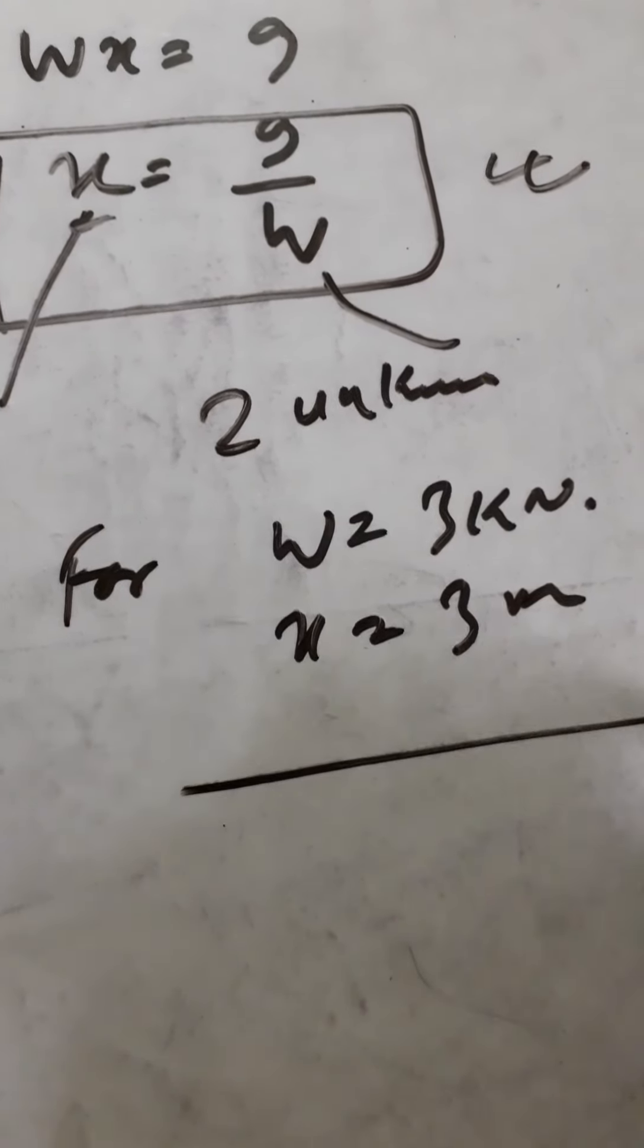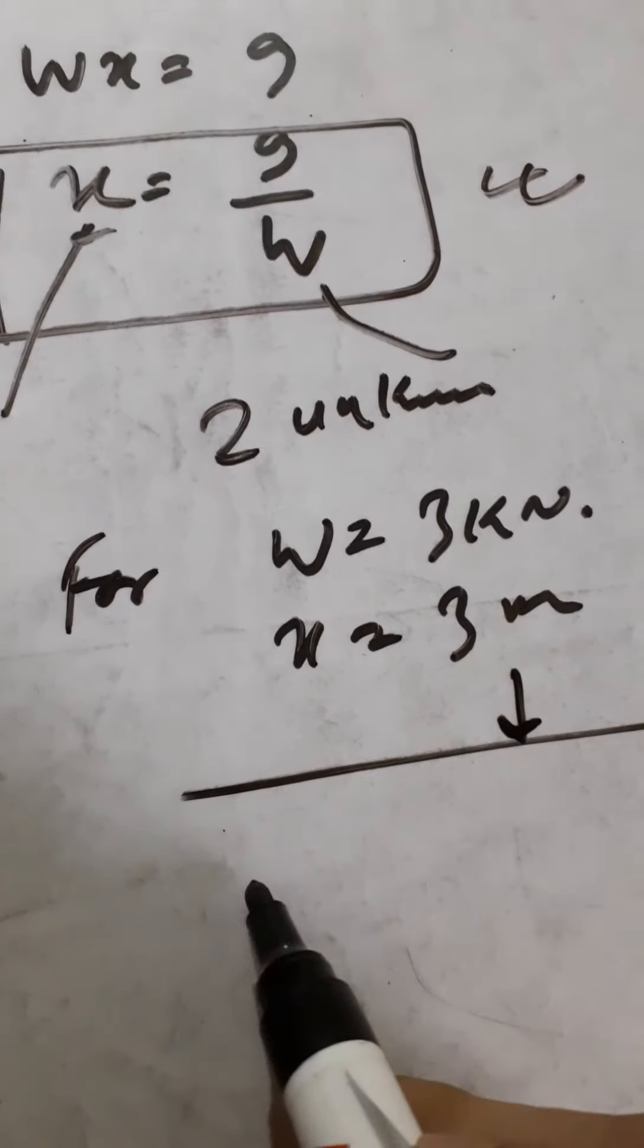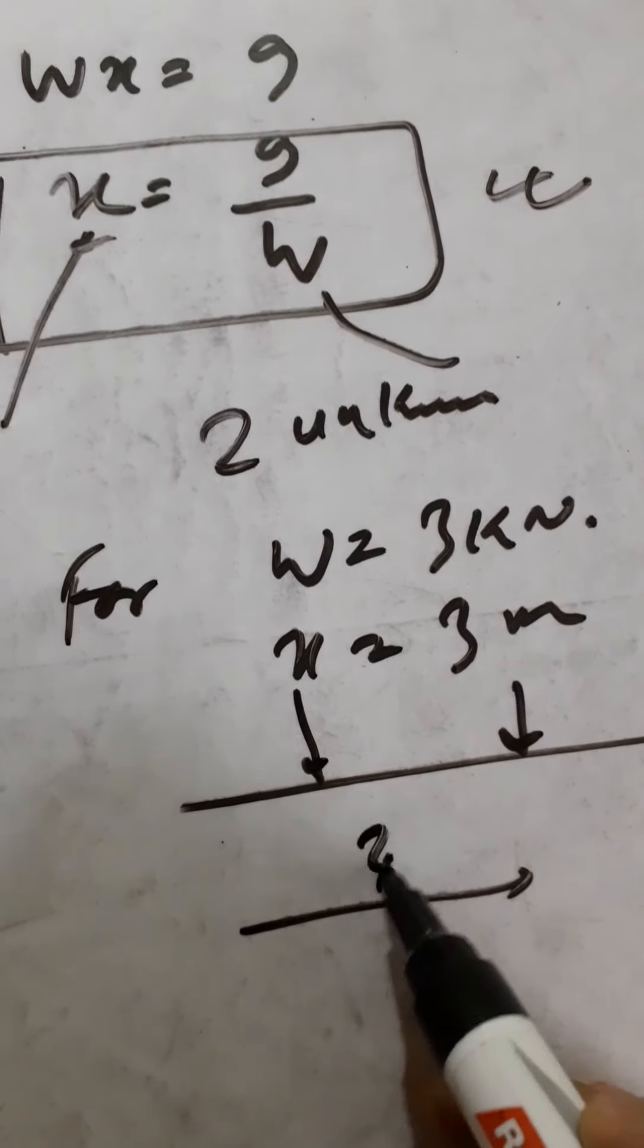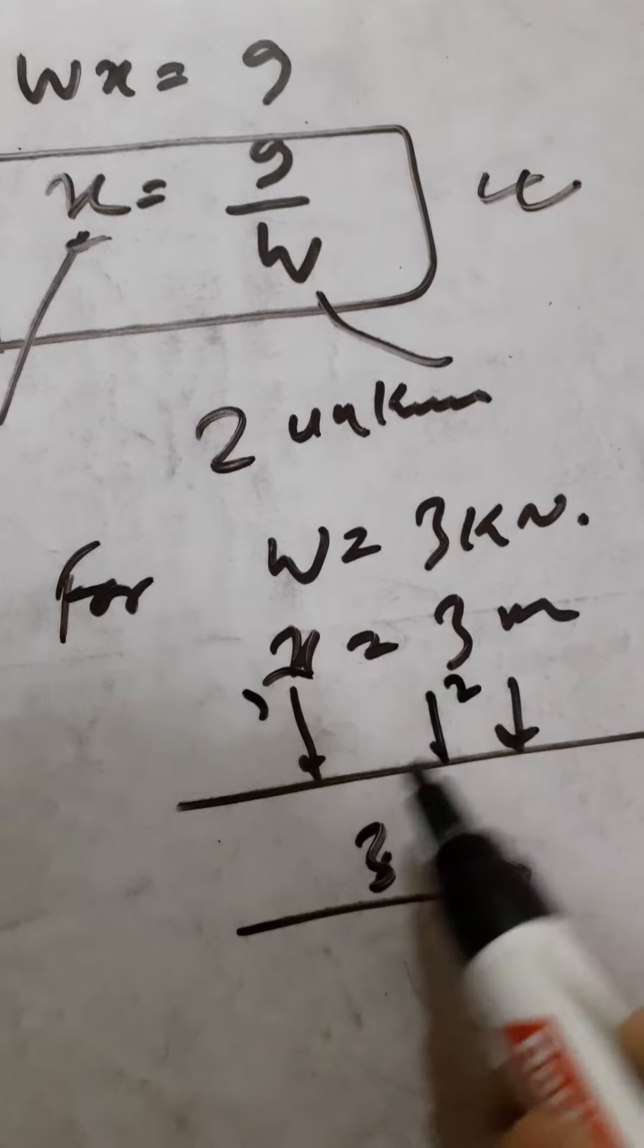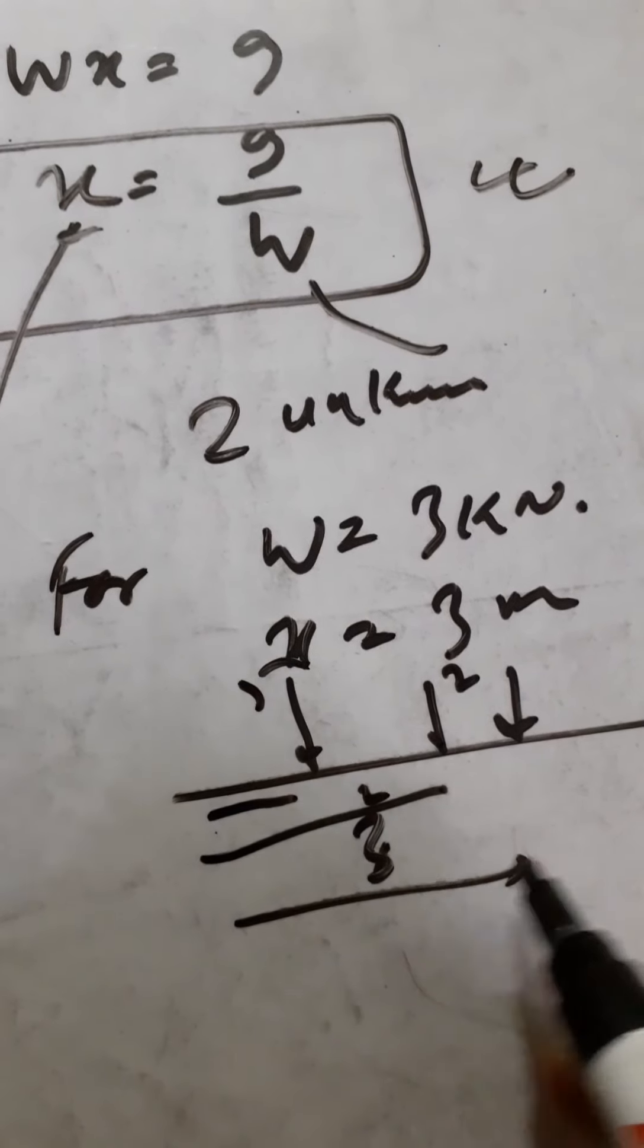In that problem, W was at 3 meter distance and W was 3kN, with 5kN and then 2kN at distances of 1 meter, 2 meters, and 3 meters.